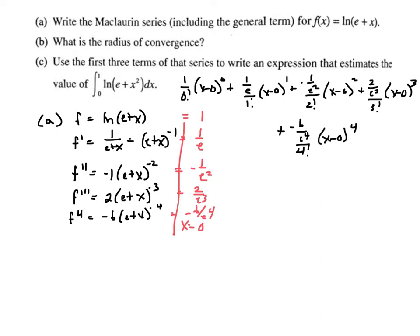Now I see some patterns here. It says make the general term. But maybe simplifying will help me see the patterns even better. So this first term would just be 1, plus 1 over e x, minus 1 over 2 e squared x squared, plus 1 over 3 e cubed x cubed, minus 1 over 4 e to the 4th x to the 4th.